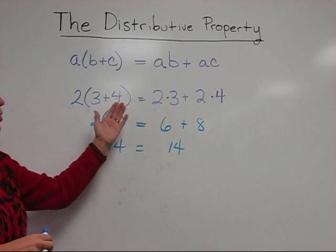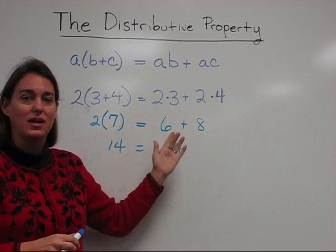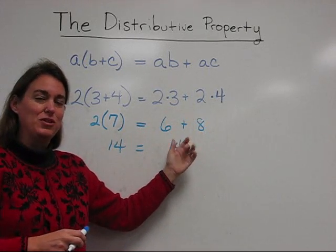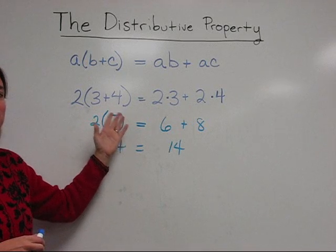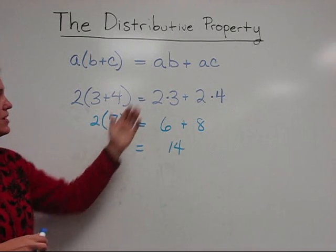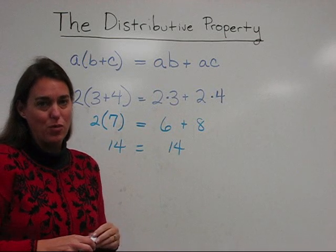These two things are equal. In some sense, the distributive property is a loophole to the order of operations. Order of operations tells us we have to do what's in parentheses first, but the distributive property tells us there is a different way to do certain problems.